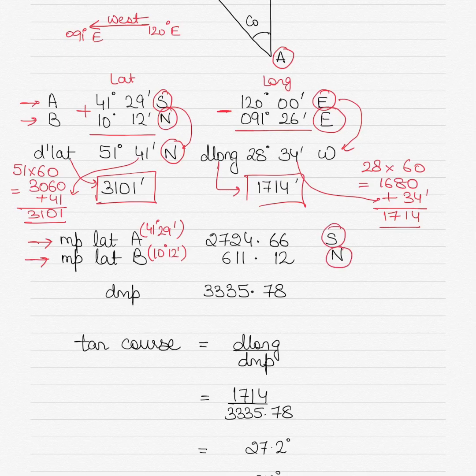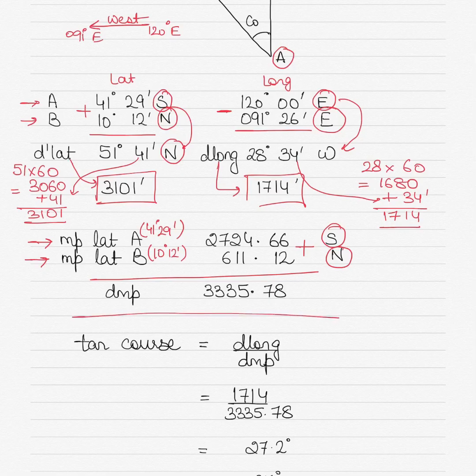based on the latitudes of A and B, the same rules as DLAT apply. You will add the two values to get the DMP, which is the difference in the meridional parts. If they were same names, you would have subtracted it. But because they are different names based on the latitude, you would add the two, and you get the DMP as 3335.78.